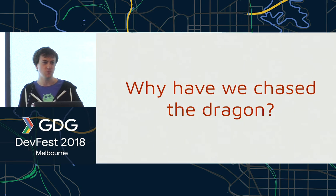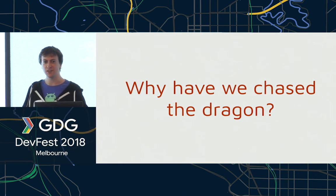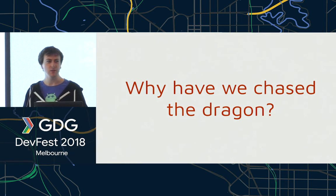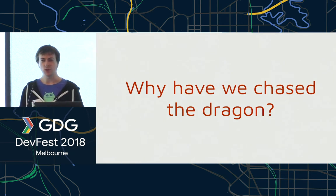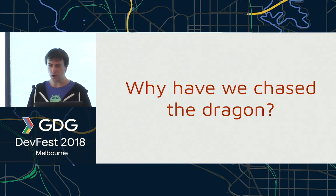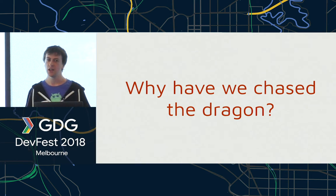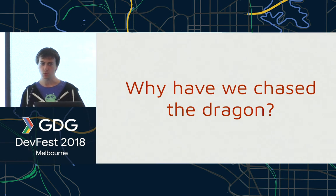I want to address the question of why have we chased the dragon? Why have we bothered learning this library that has hundreds of operators and involves inverting the way you're used to programming — you need to think in a pull-based model now. To me, the big win as an Android developer has been that we need to compose a whole lot of asynchronous systems and get them to work together in concert, and RxJava is a really good tool for managing that.